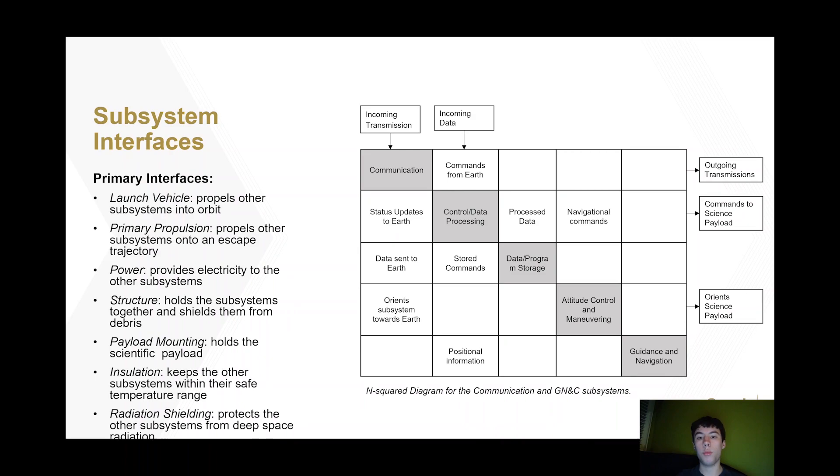Next, we looked at the interfaces between the subsystems. Several of these are quite general and applied to the whole spacecraft. For example, the primary propulsion subsystem has to carry all of the other subsystems onto the escape trajectory, so it must consider the parameters of the rest of the spacecraft and its interface.